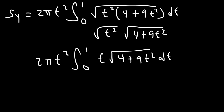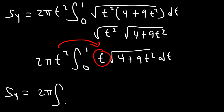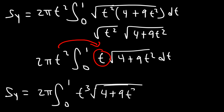Now I'm going to take the t² on the outside and combine it with the t on the inside. So S sub y is equal to 2π times the integral from 0 to 1 of t to the 3rd times the square root of 4 plus 9t², dt.